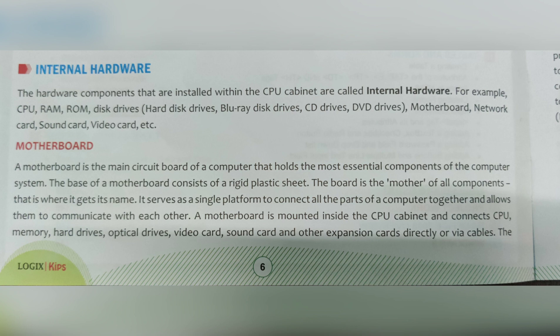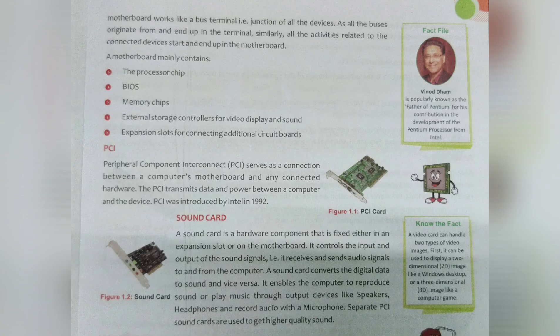The motherboard is mounted inside the CPU cabinet and connects the CPU, memory, hard drives, optical drives, video card, sound card, and other expansion cards directly or via cables. The motherboard works like a bus terminal — just as all buses originate from and end at a terminal, all activities related to connected devices start and end at the motherboard. A motherboard mainly contains the processor chip, BIOS battery, memory chip, external storage controllers, video display and sound controllers, and expansion slots for connecting additional circuit boards.